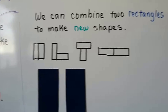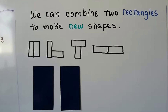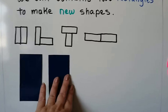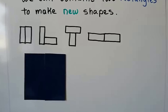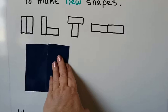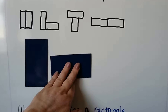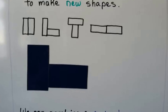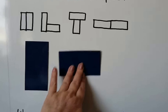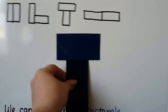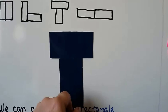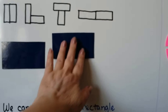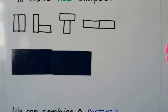We can combine two rectangles to make new shapes. We can put them side by side like this, or put one going a different way, or make a T by putting them like this, or put them end to end like this to make a new shape.